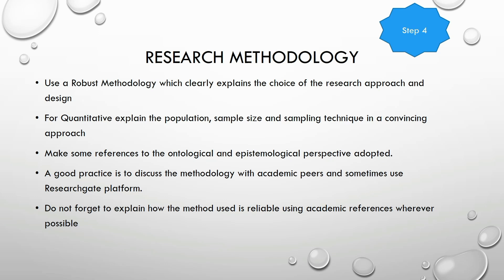Good journals always check whether the research methodology is robust enough before publication. Whether quantitative or qualitative, what is important is that you convince the editor and reviewers that the research approach is appropriate. Read research methodology books and articles before writing this section. For quantitative research, explain the population, sample size, and sampling technique convincingly. As good practice, make references to the ontological and epistemological perspective, and discuss your methodology with peers and on research platforms.